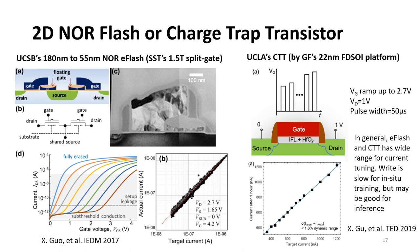RRAM and phase change memory are still emerging, but don't forget mature technologies such as floating-gate or charge-trap transistors. UCSB's team demonstrated down to 50nm low-power E-flash-based synaptic arrays with the synaptic gate device structure. UCLA's team recently demonstrated a charge-trap transistor-based weight cell using Global Foundry's 22nm FD-SOI platform. In general, E-flash or CTT-based solutions have a wide range for current tuning, and write-and-verify is typically used to fine-tune the current. However, the write operation is quite slow for charge-trap or floating-gate transistors, so this is good for inference only but not suitable for training.